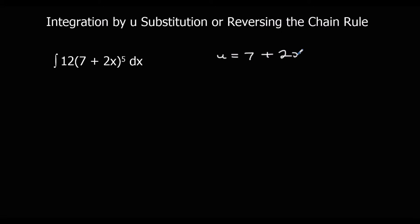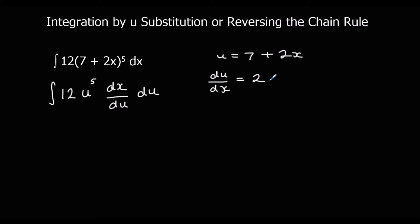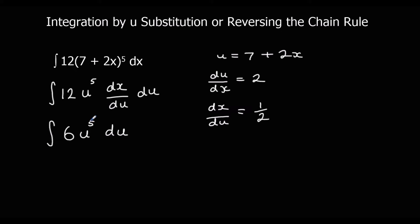So we're going to integrate 12u to the power of 5 times dx/du with respect to u. du/dx is 2, so dx/du is one half. So 12 times one half gives us 6, so we integrate 6u to the power of 5 with respect to u. Add 1 to the power to get u to the power of 6, divide by the new power, giving us u to the power of 6 plus c. Changing u back to 7 plus 2x, we get (7 plus 2x) to the power of 6 plus c.